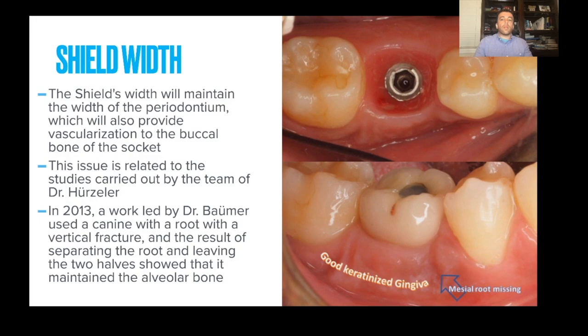Shield width will maintain the width of the periodontium, also providing vascularization to the buccal bone of the socket. This relates to studies by Dr. Herzler's team. In 2013, a work led by Dr. Balmer used a canine with a root vertical fracture — separating the root and leaving two halves showed that this actually maintained the alveolar bone. In a molar case, once the mesial root was taken out, a depression was seen in the mesial aspect.